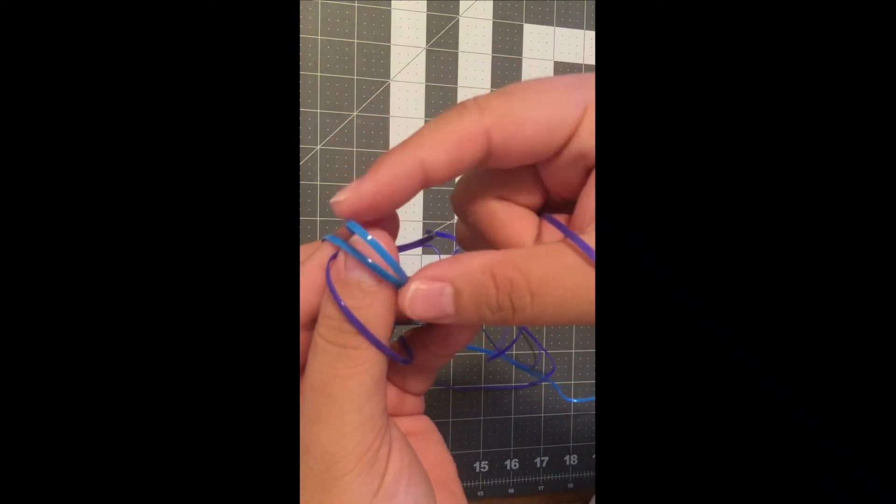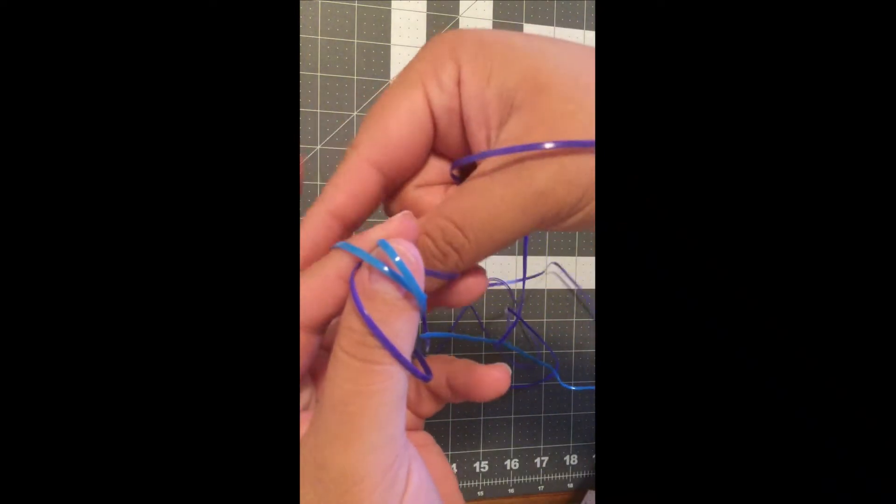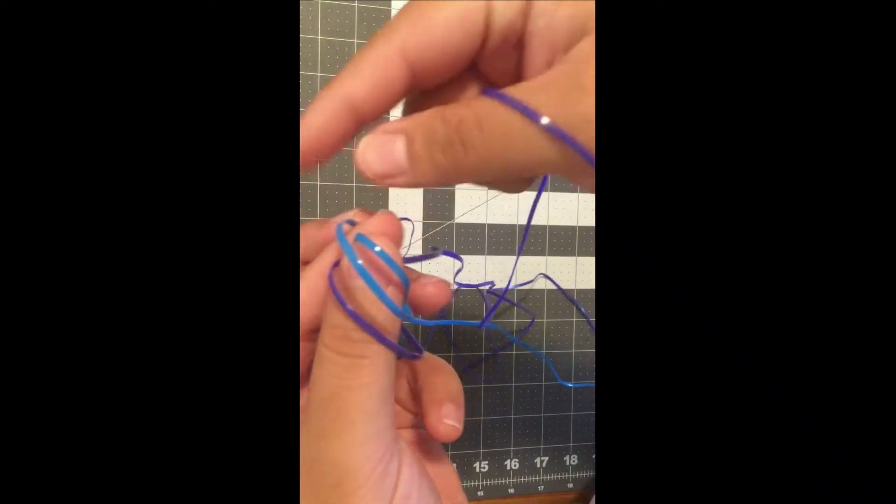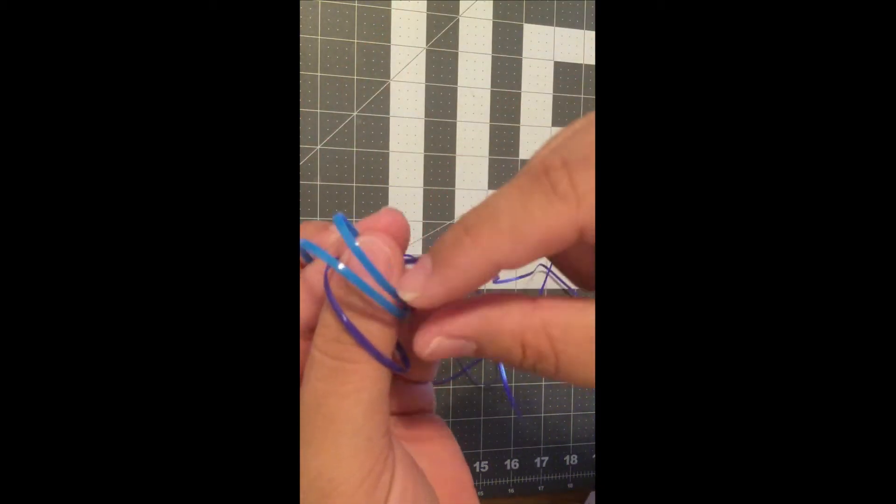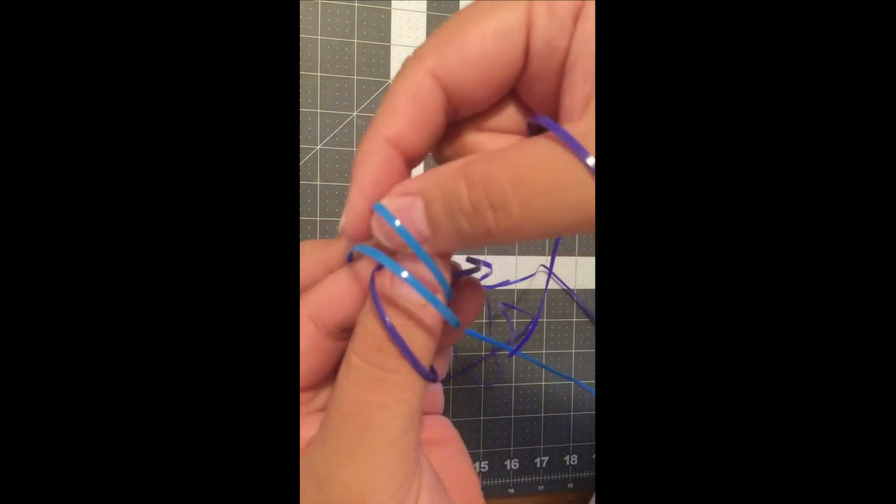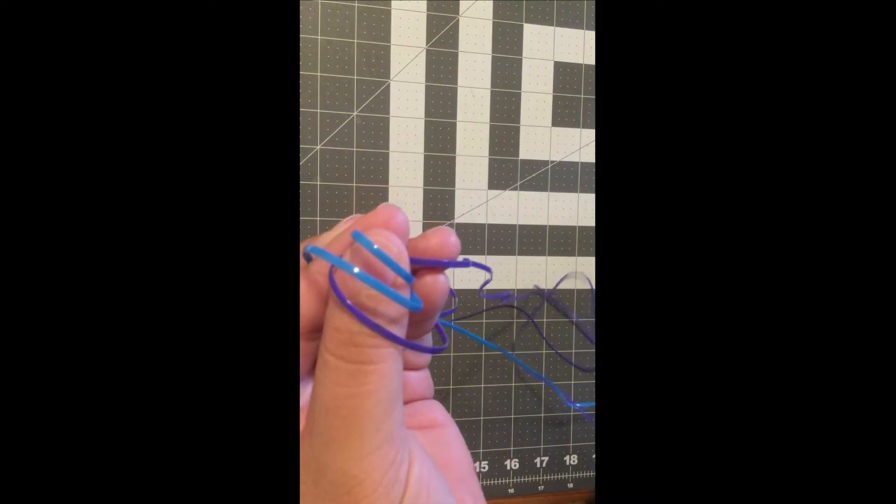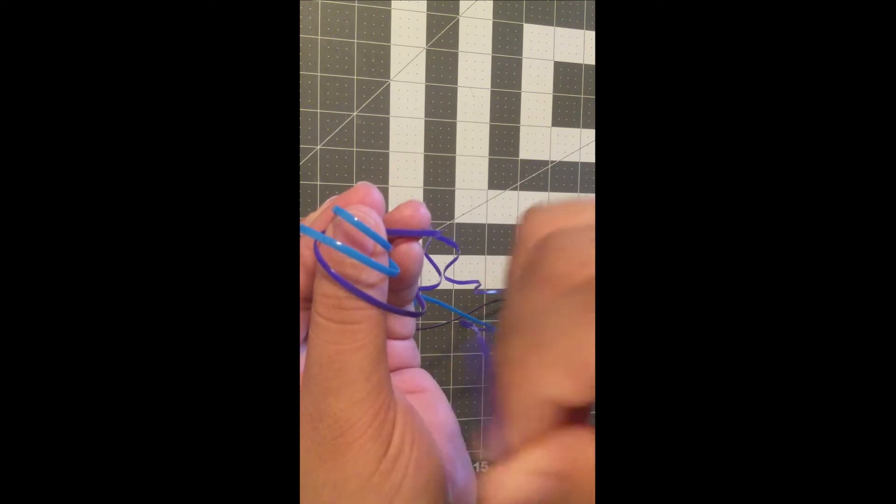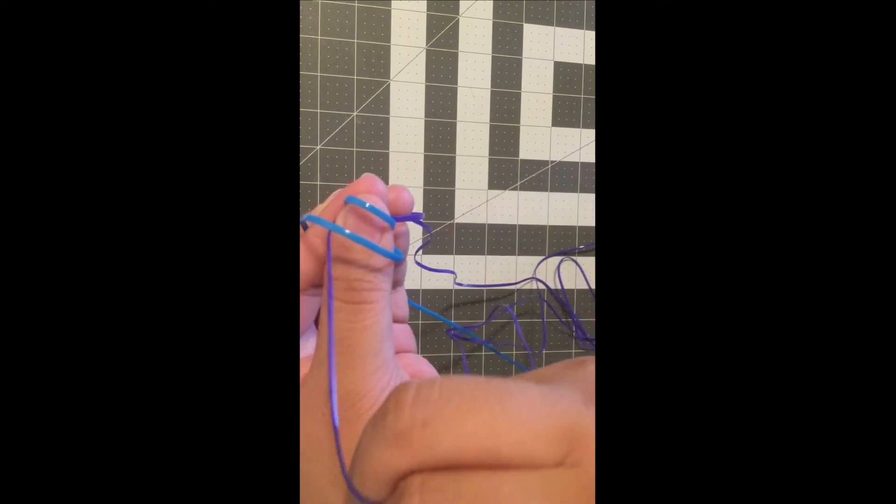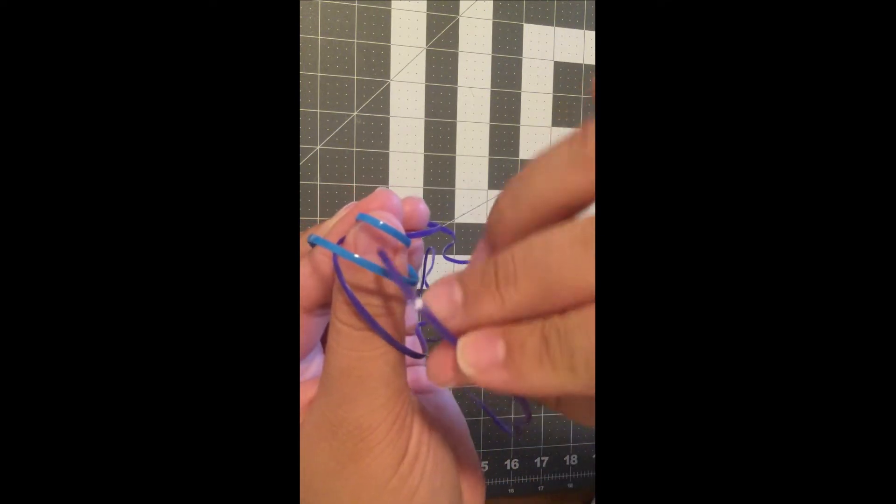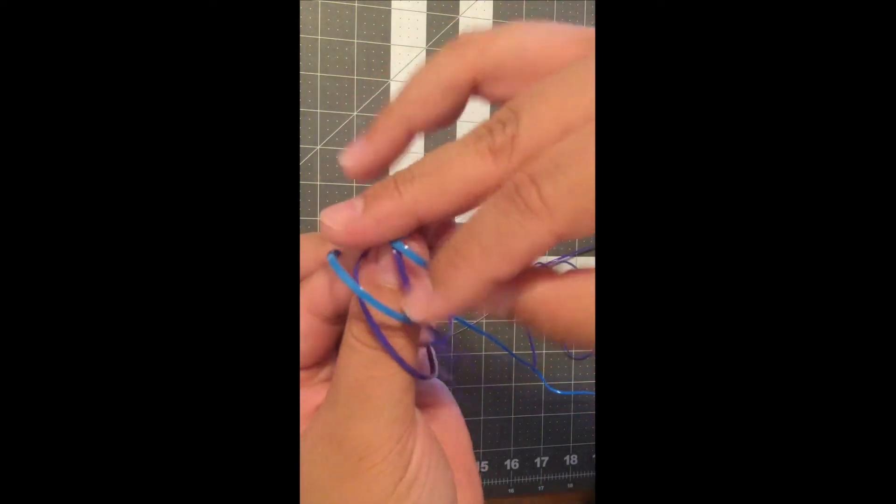As you can see the cord has an open side and a closed side. You want to feed your side to side cord, for me that's purple, over and under through the loops. Make sure that the cord is flushed against the side that is closed.